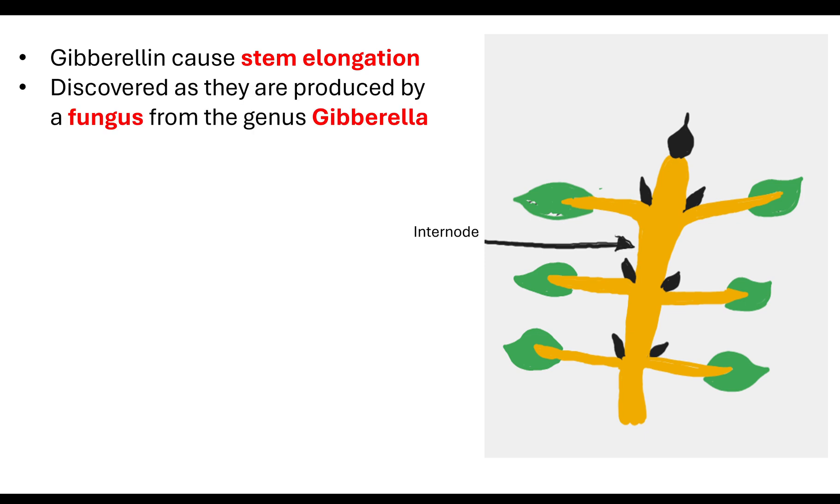They were discovered to be produced by a fungus. That's why gibberellin is from the name of the fungus, the genus, the generic name, Gibberella. They discovered these hormones were produced by this fungus. But they also discovered they were made by the plants. These hormones are made not only by fungus but also by plants.